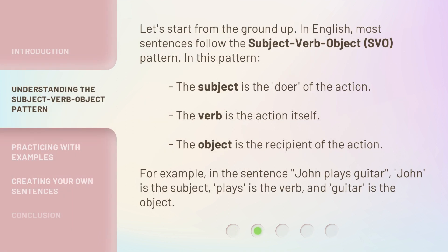Let's start from the ground up. In English, most sentences follow the subject-verb-object, SVO, pattern. In this pattern, the subject is the doer of the action, the verb is the action itself, and the object is the recipient of the action.